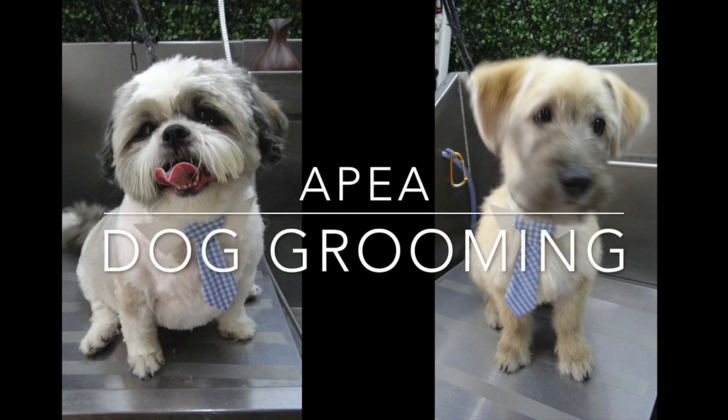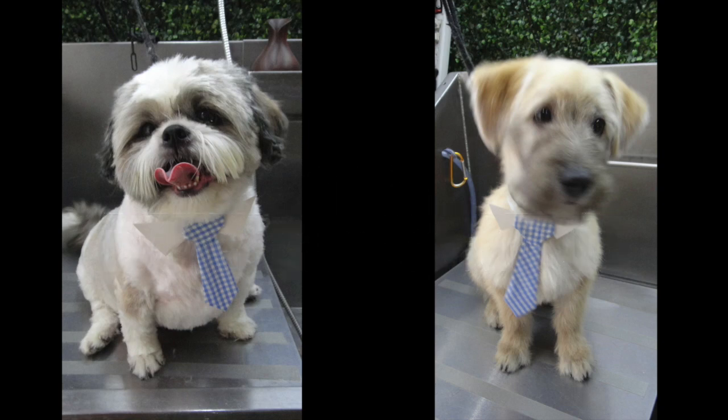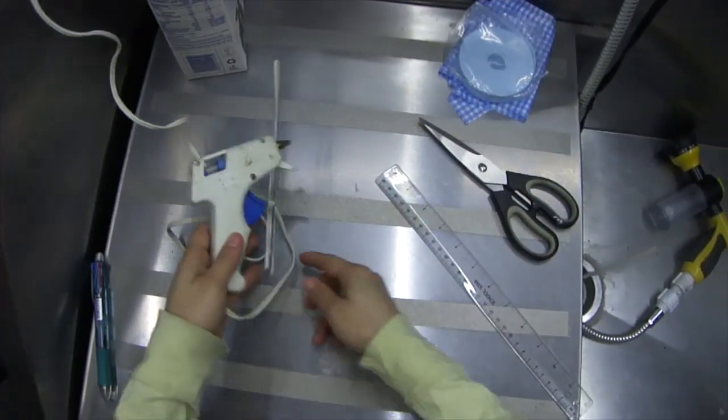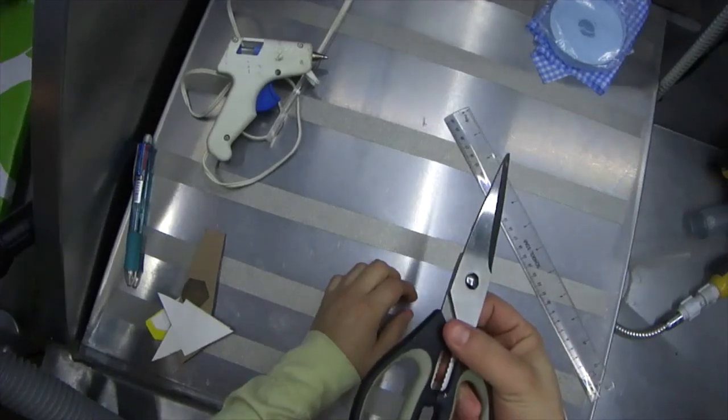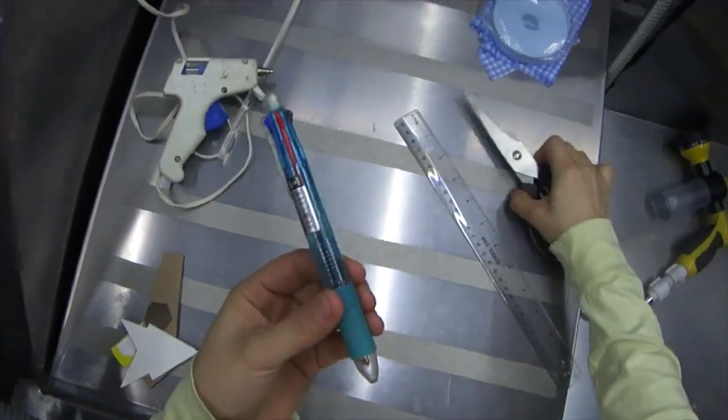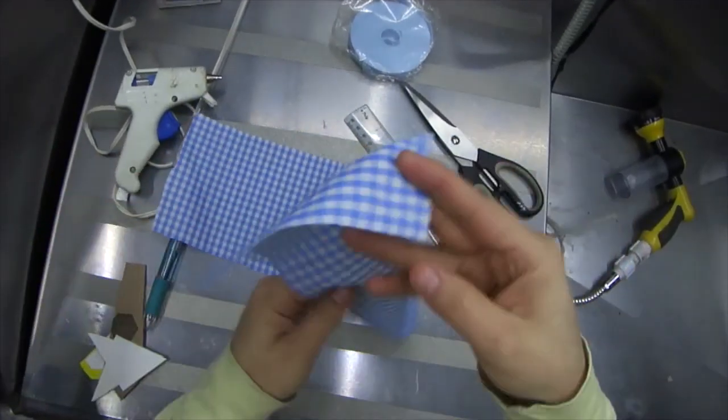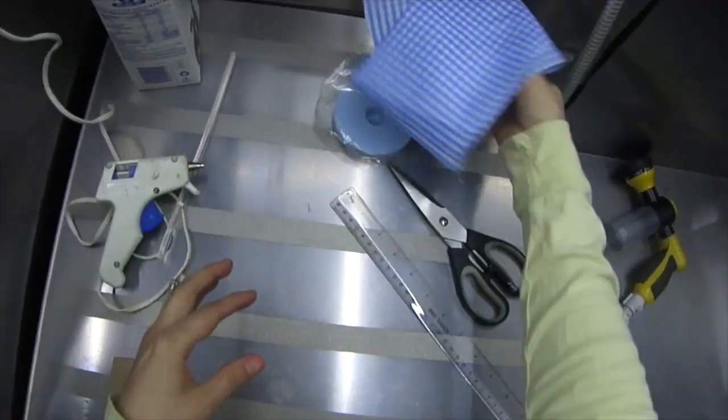Happy holidays. Today we are making bow ties. Here are some things you will need: a hot glue gun, a pair of scissors, a pen, fabric of your choice, and some binding tape.